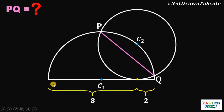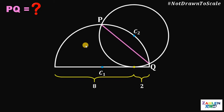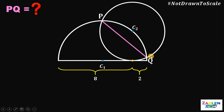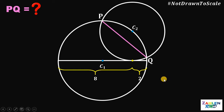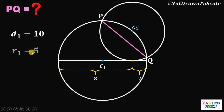In this question, we're given a semicircle and a circle. To answer this, what we're going to do is complete this semicircle into a whole circle. Notice that the length of the diameter of this big circle must be equal to 8 plus 2, or simply 10. It follows that the radius of this big circle must be equal to 5.